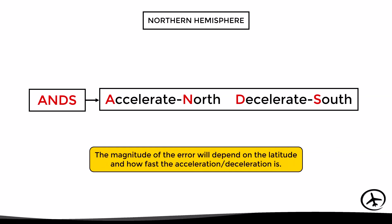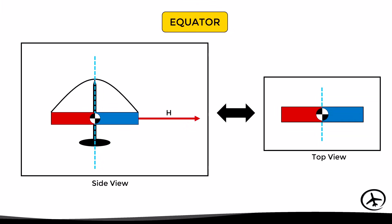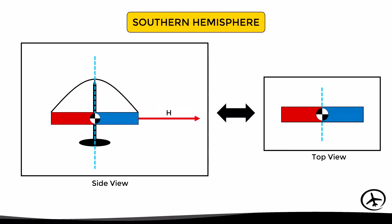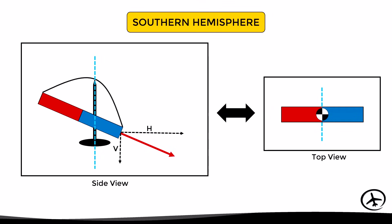Now let's look at the case of the southern hemisphere. At the equator the magnetic field force is totally horizontal and the center of gravity is aligned with the pivot point. However, in the southern hemisphere the magnet tilts the opposite way due to the magnetic dip effect. Viewed from the top, the center of gravity is shifted to the red side of the magnet — the opposite of the northern hemisphere where it shifted to the blue side. This implies that the errors due to acceleration will be opposite.